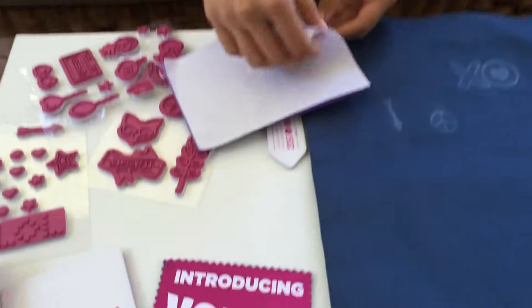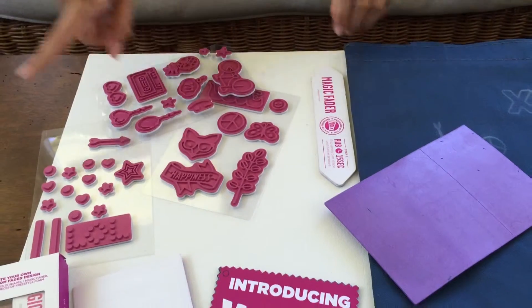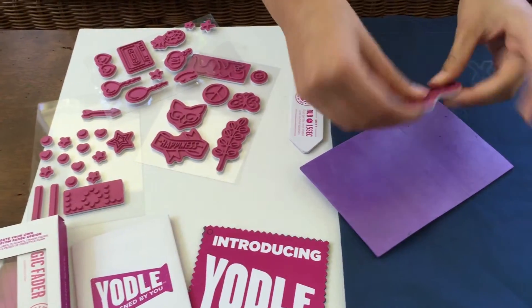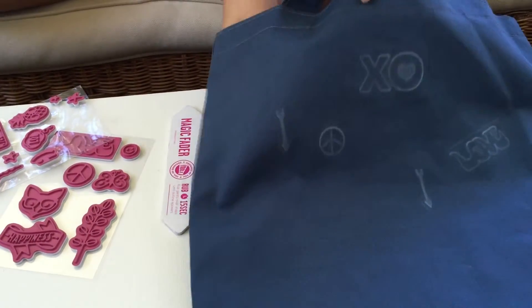We're going to start by taking the freestyle foam and peeling off the backing. As you can see, there are many shapes to choose from. I'm going to go with the bike today and put the sticky side down on the sticky side, and put it right under the magic fabric.